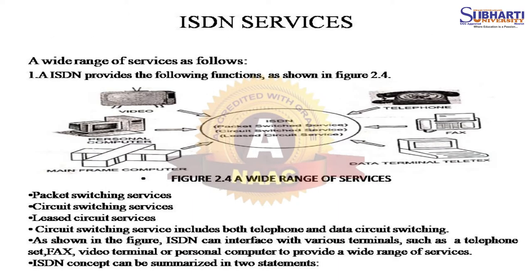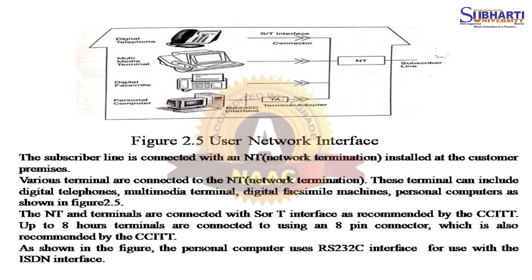ISDN Services: ISDN provides a wide range of services including Packet Switching Services, Circuit Switching Services, and Leased Circuit Services. Circuit Switching Services include both telephone and data circuit switching. ISDN can interface with various terminals such as telephone, fax, video terminal, or personal computers to provide a wide range of services.